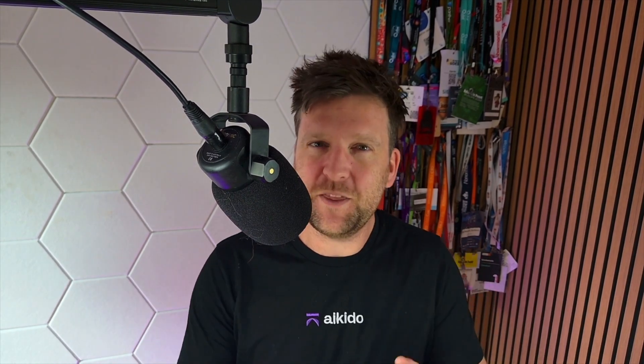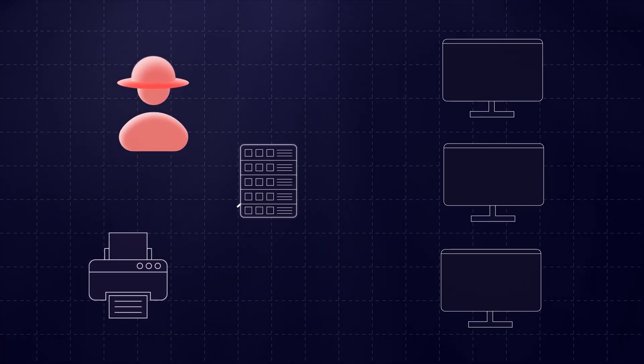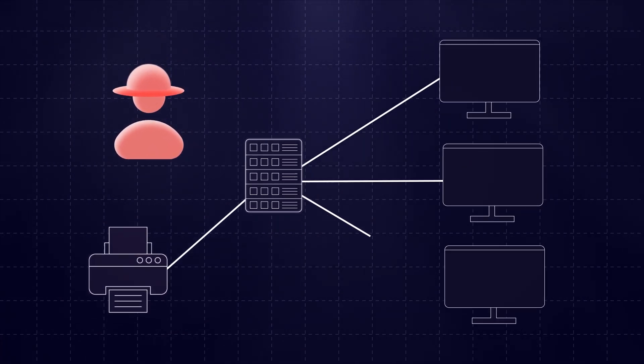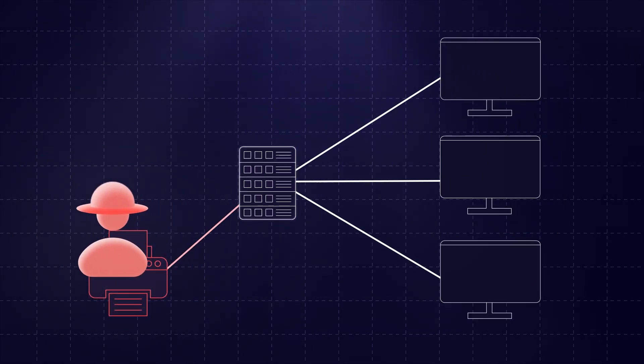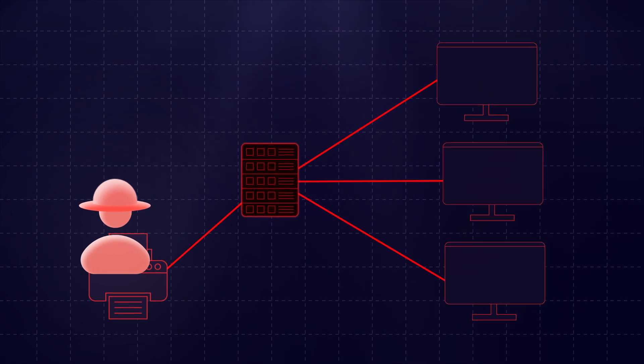Let's move on to default credentials. Default credentials are when something you buy or an application comes with default credentials. Sometimes it's web apps — WordPress used to have default credentials, which caused so many account takeovers. But it's really common in IoT devices, like printers. Attackers actually target these Internet of Things devices — basically anything connected to the internet in your house that isn't necessarily a computer — because they often come with default credentials or hard-coded keys.